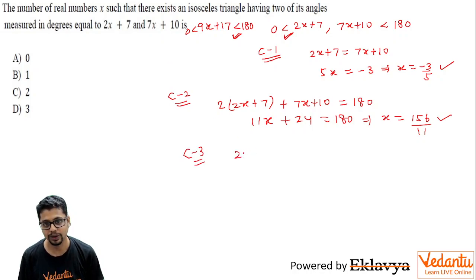Similarly you will have a case 3 where 7x plus 10 is the repeated angle and you have 2x plus 7 plus 2 times 7x plus 10 equal to 180.